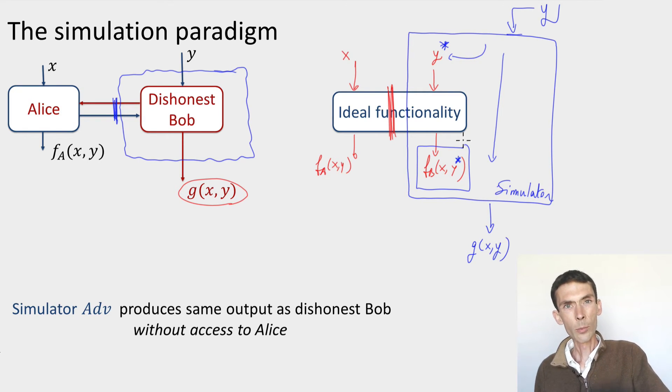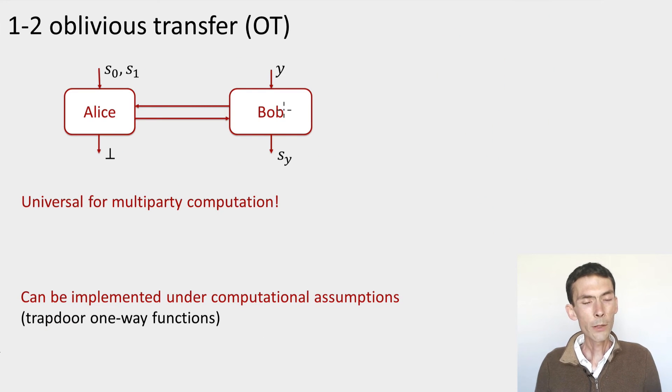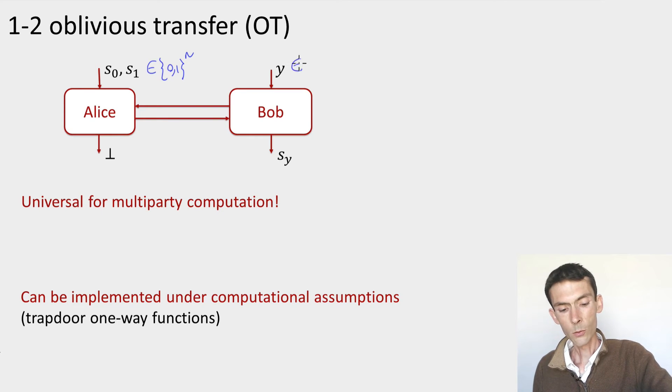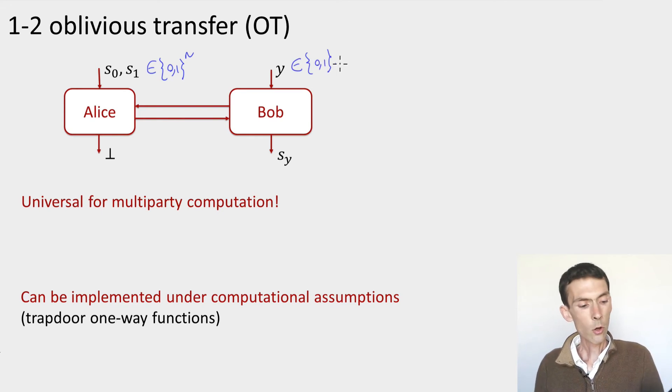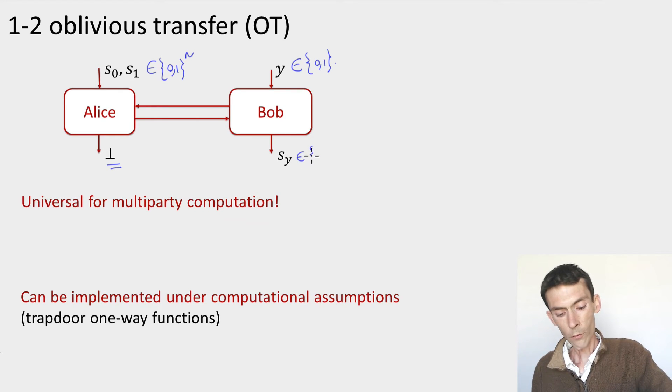So let's look about the example of oblivious transfer. So here's what oblivious transfer achieves. In oblivious transfer, Alice has two inputs, S0 and S1, and think of these as n-bit strings, whereas Bob has a single input, and this input is just a single bit, Y, in 0,1. And the goal is that at the end of the protocol, Alice should obtain nothing. That's what this perp symbol means. And Bob should obtain one of Alice's two strings, which one? The one that is indexed by his bit Y. So this will be just one of Alice's string. It's an n-bit string.